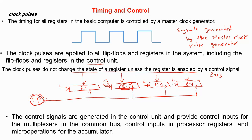The control signals are generated in the control unit and provide control inputs — control inputs for the multiplexers in the common bus, control inputs in processor registers, and micro operations for the accumulator.